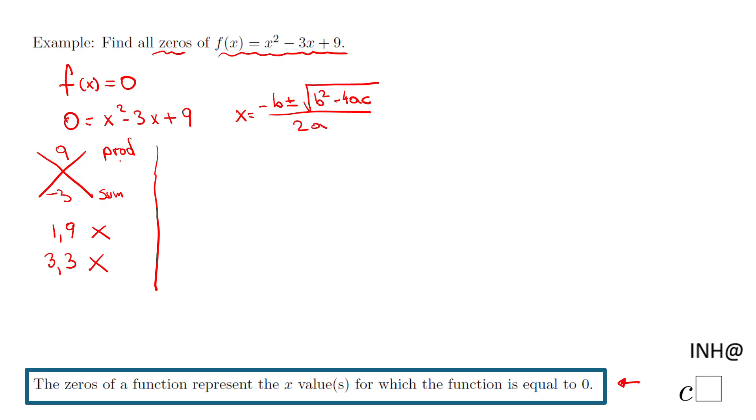My first step here will be to evaluate this discriminant b² - 4ac. In this case, what is b? B is -3, the coefficient in front of x. How much is a? A is 1, the invisible one in front of x². And what is c? C is this 9.